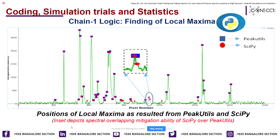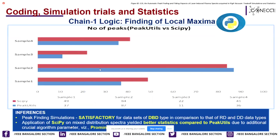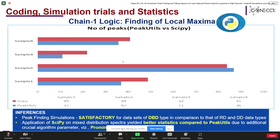However, as you can see in this figure, scipy was able to detect the hidden peaks. We have further extended our simulations on denoised baseline-corrected datasets of all four samples and plotted a horizontal bar plot of number of peaks with respect to peakutils and scipy. The brown color bars resulting from scipy show additional numbers of peaks. This attribute is mainly due to the algorithm parameter of scipy called prominence.